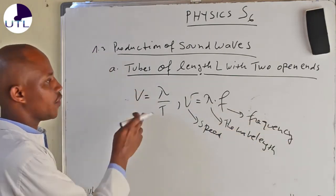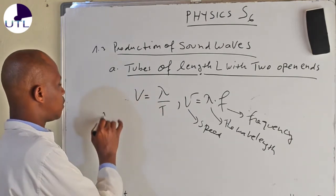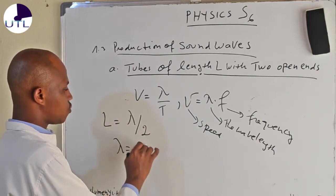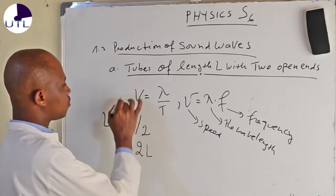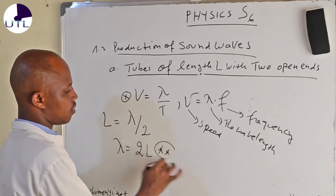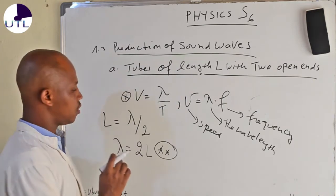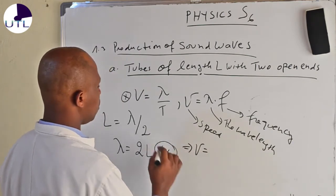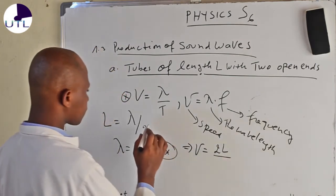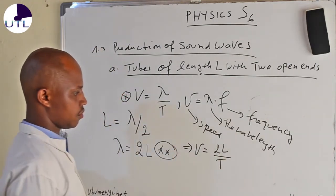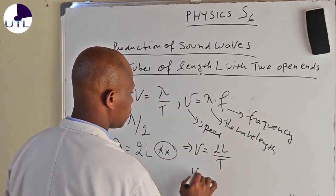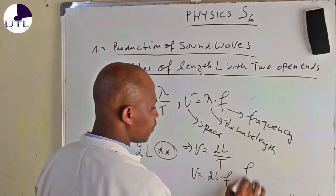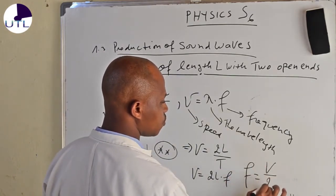The wavelength is equal to λ. Now, if we take the first example where the length equals wavelength divided by 2, that means wavelength equals 2 times length. Replacing this — let's call this equation star and this equation star star — replacing equation star into the speed formula: V equals 2L divided by period, which means V equals 2L times frequency. Therefore, the frequency will be equal to the speed divided by 2 times the length.